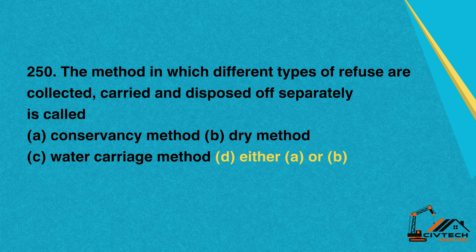Question 250: The method in which different types of refuse are collected, carried, and disposed off separately is called. A. Conservancy method. B. Dry method. C. Water carriage method. D. Either A or B. Correct option: D. Either A or B.